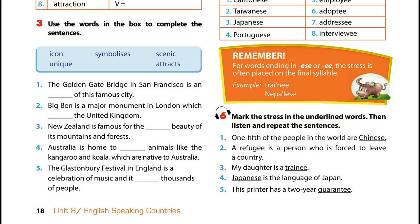1. One-fifth of the people in the world are Chinese. 2. A refugee is a person who is forced to leave a country. 3. My daughter is a trainee. 4. Japanese is the language of Japan. 5. This printer has a two-year guarantee.